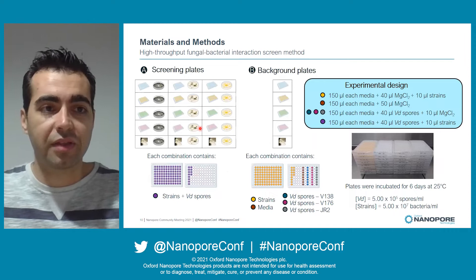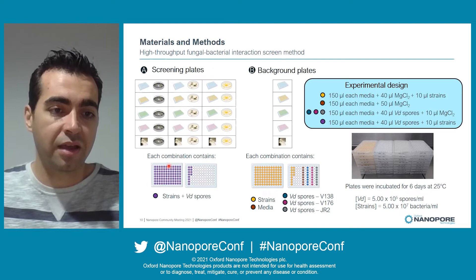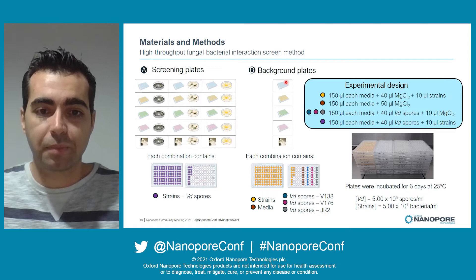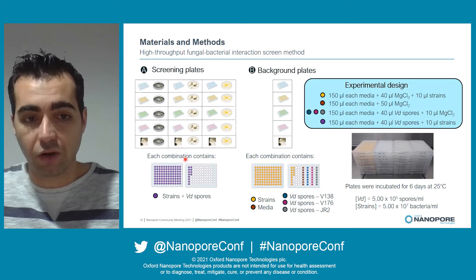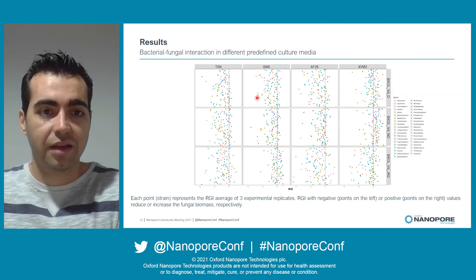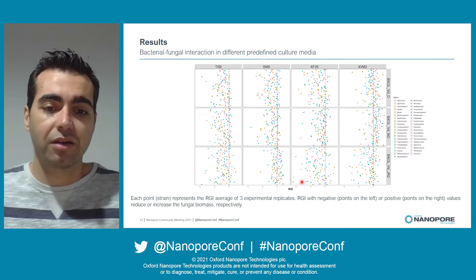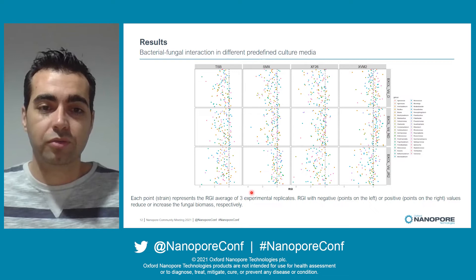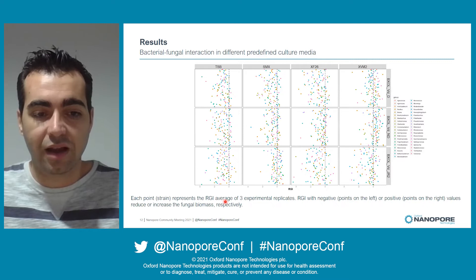Once we had everything, we performed a high-throughput fungal-bacteria interaction screen method. We had the screen plate containing the bacterial strain plus Verticillium spores, and the background plate containing the strain, the media, and the different Verticillium spores of each strain used. All plates were incubated for six days at 25 degrees Celsius. I'm now showing you some results based on the relative growth index, which transforms fluorescent values to reflect the ability of a bacterial strain to promote or restrict fungal biomass. Each point represents one strain and is the RGI average of three experimental replicates.